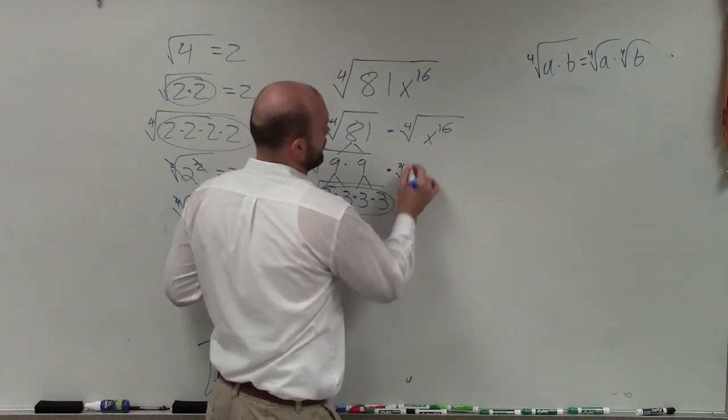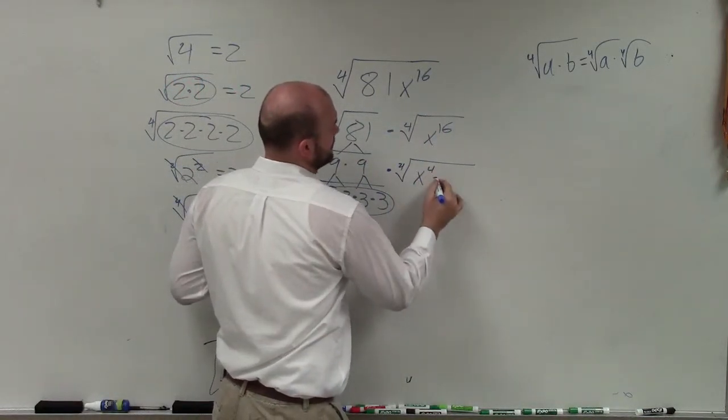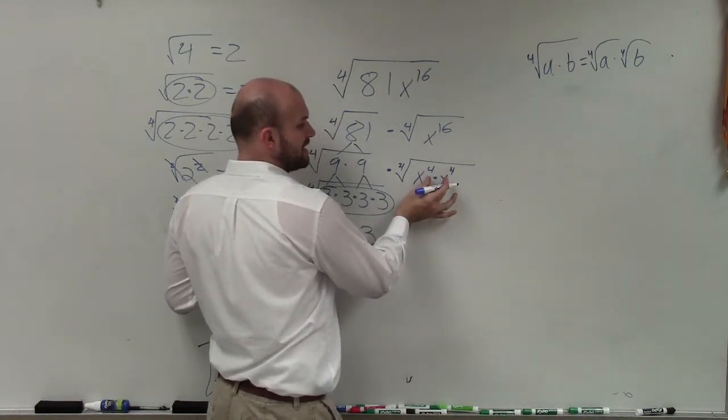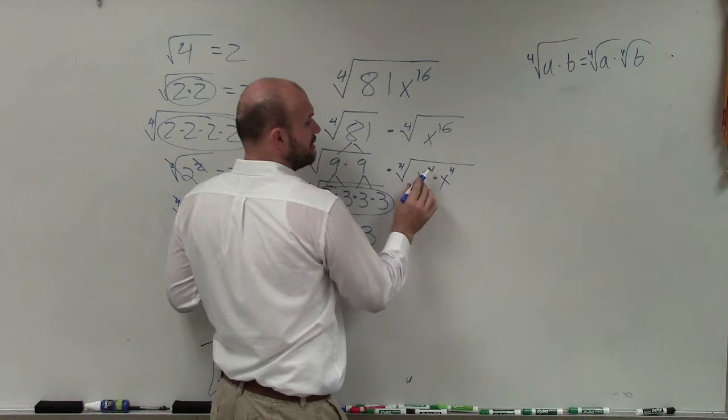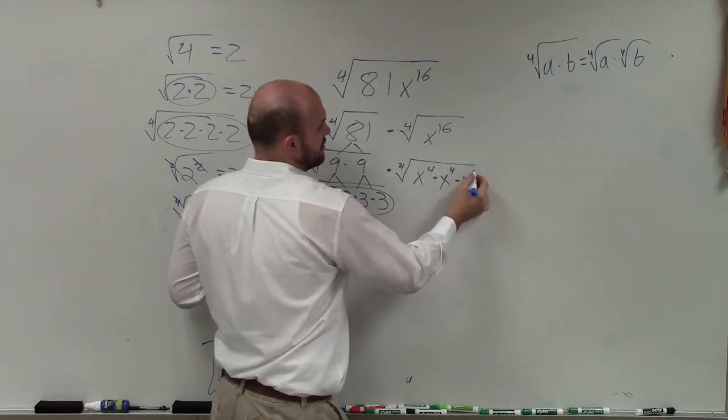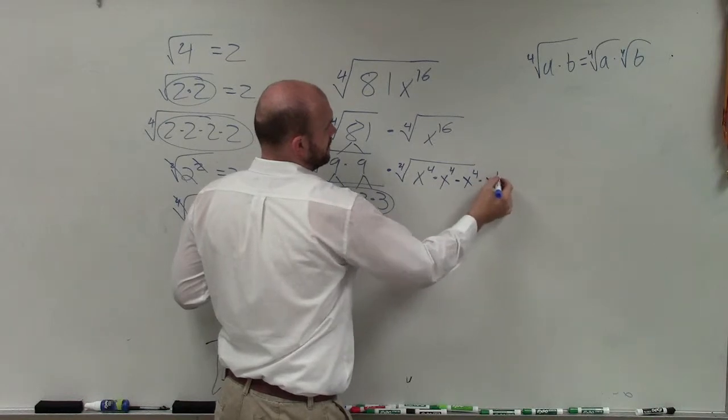So how many x to the fourth powers do I need to multiply to give us x to the 16th? Now, remember, when you multiply exponents with powers, you add the powers. So 4 plus 4 is 8, 12, 16.